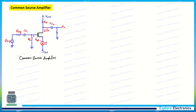Here is the common source amplifier circuit, consisting of a MOSFET biased using a constant current source connected to the source of the device. We provide the input from the gate and measure the output from the drain. V_signal is the small signal to be amplified, with an internal resistance R_signal. We have two coupling capacitors CC1 and CC2 which block the DC component and allow only AC. At the input we have RG, and at the output we have RD connected with load resistor RL.